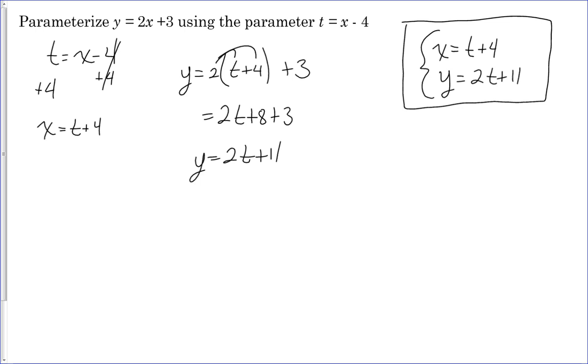So it's fairly simple. The first one, like we did here, you just simply take your parameter and solve for either x or y, whichever one is present. And once you solve it for either x or y, that's the first equation for your answer.